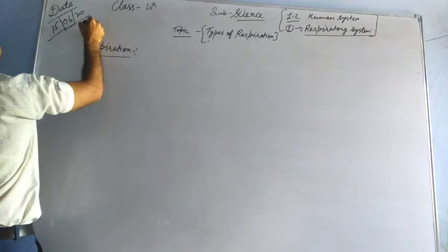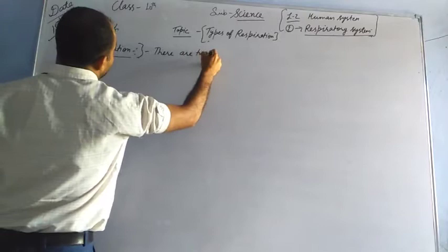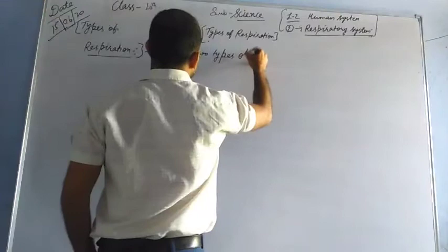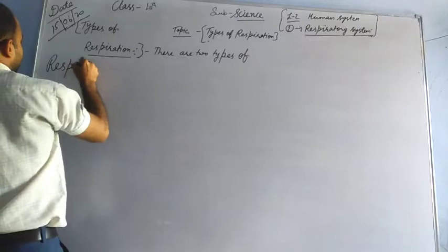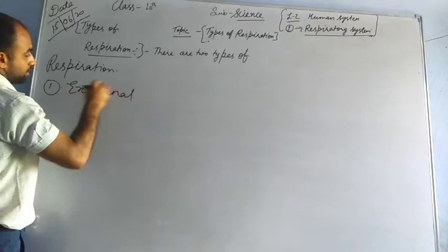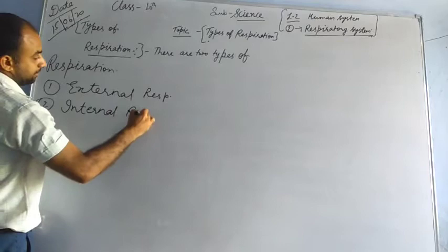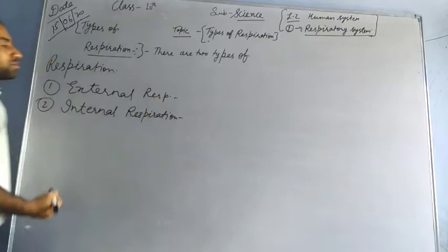So in respiration, after what I have told you, I am going to start the types of respiration. There are two types of respiration. Number one, which is considered, is external respiration.